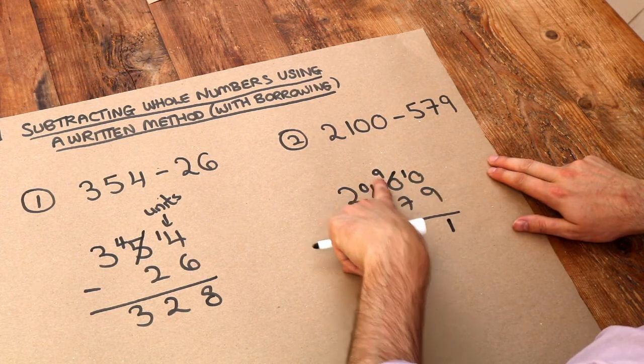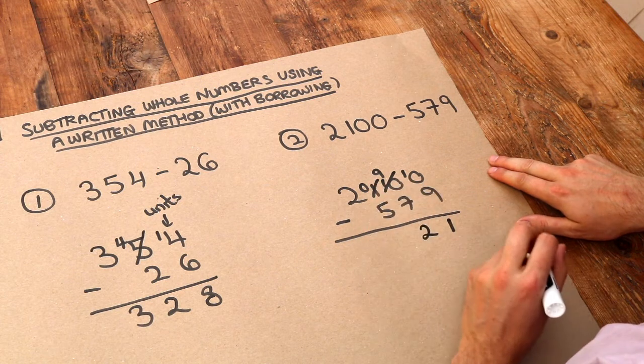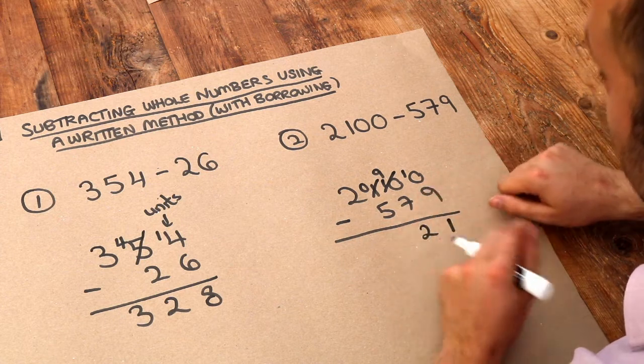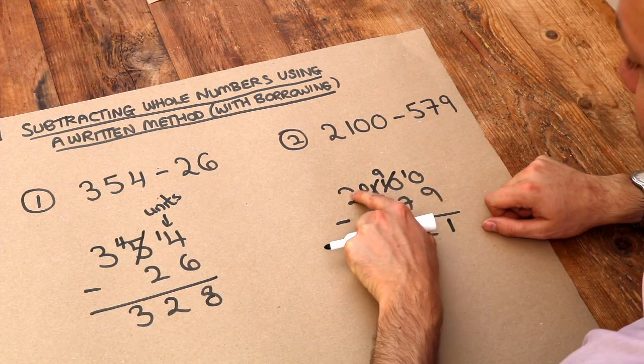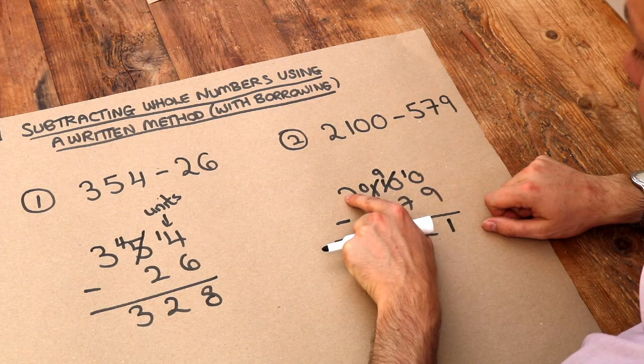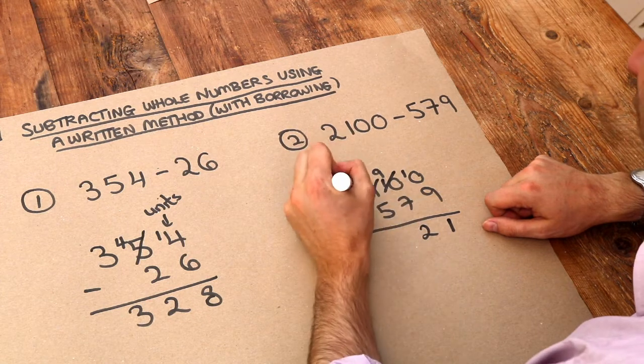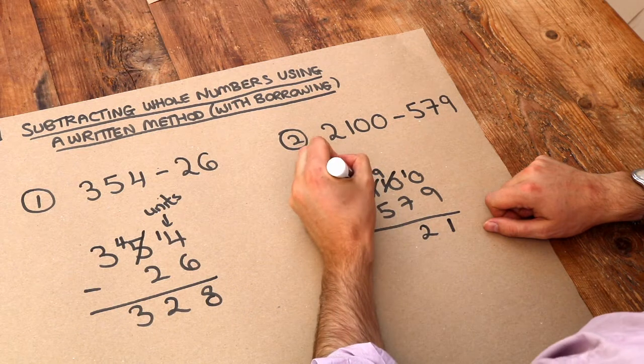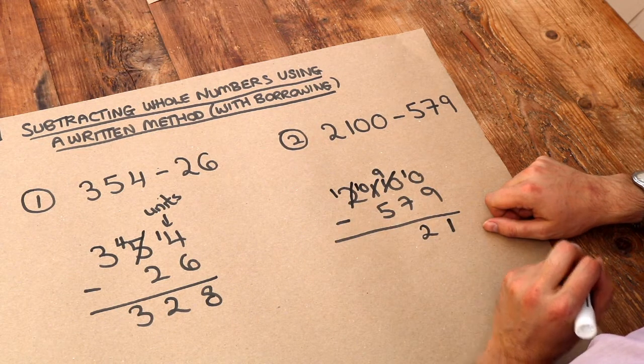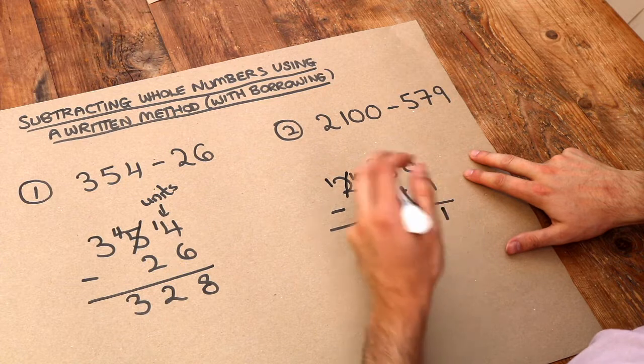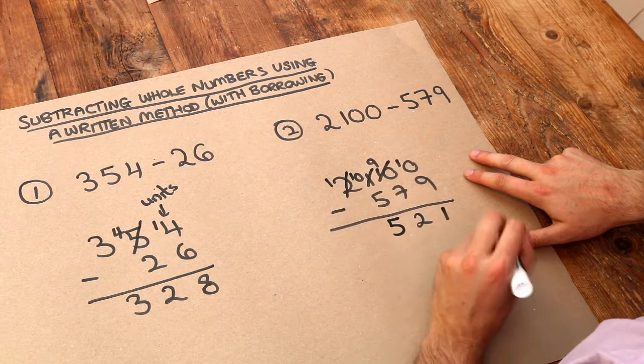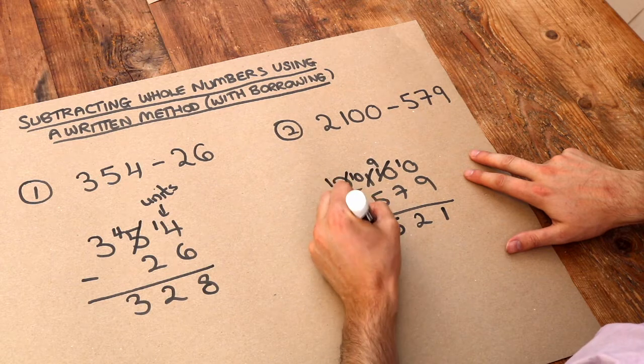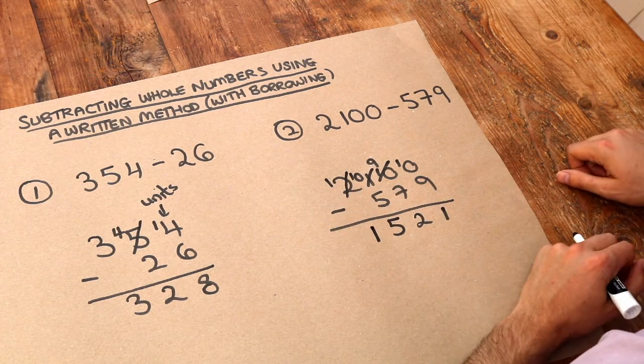Then look to the column to the right, we've now got 9 minus 7 which is 2. And now we've got 0 minus 5, we can't do that, so we can borrow from the digit just to the left of that top digit there. That 2 gets reduced by 1 to 1, and that allows us to put a 1 on that digit there. So now we've got 10 minus 5 which is 5, and then finally we've got 1 minus nothing which is just 1, and that is the final answer.